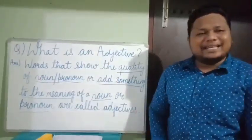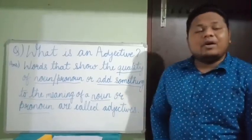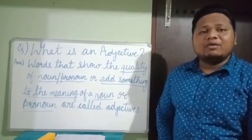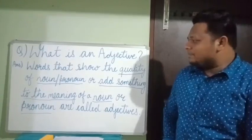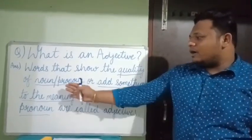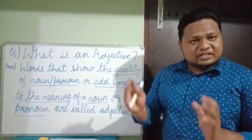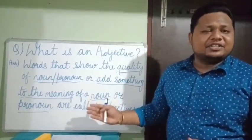Good morning to all the students. Today we are going to do chapter 7 of your grammar book: adjectives. What is an adjective? The words that show the quality of a noun or pronoun, or add something to the meaning of a noun or pronoun, are called adjectives.